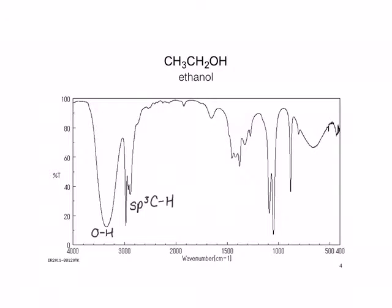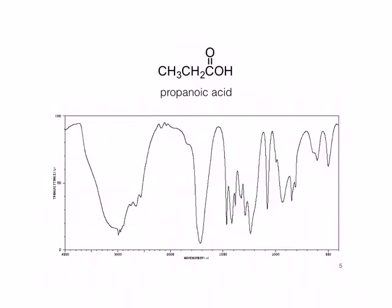Next, we'll look at another molecule that contains the OH functionality, but in a carboxylic acid rather than an alcohol. Propanoic acid contains the OH functionality as part of the carboxylic acid, and we can still see that characteristic broad OH stretch just above 3000 wavenumbers. The difference with the carboxylic acid is that we'll also see the carbon-oxygen double bond, which is always going to be the strongest peak visible, sharp, and very intense. We do see some SP3 carbon-hydrogen stretches, although they're dwarfed by that large, broad OH stretch.